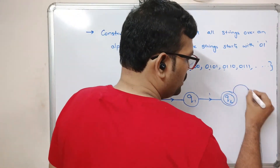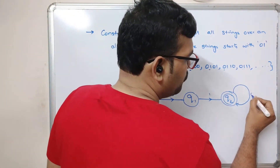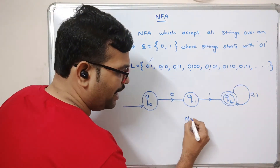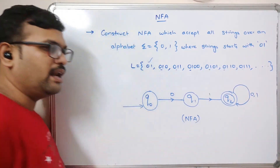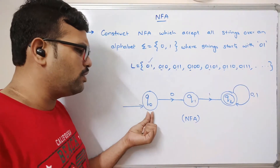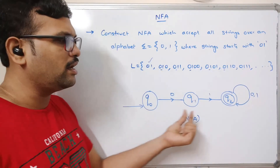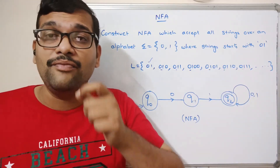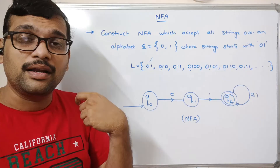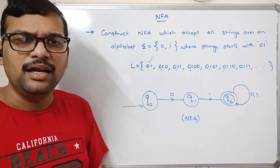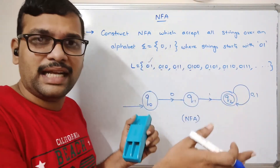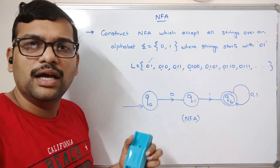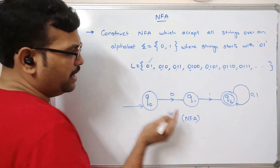After the '01' prefix, any number of zeros and ones can appear, so we add a self-transition on both 0 and 1 at Q2. This is the NFA. You need not worry about the transition from Q-naught on 1, or from Q1 on 0. There is no restriction that every state must have a transition — a state can have a transition or may not have one.